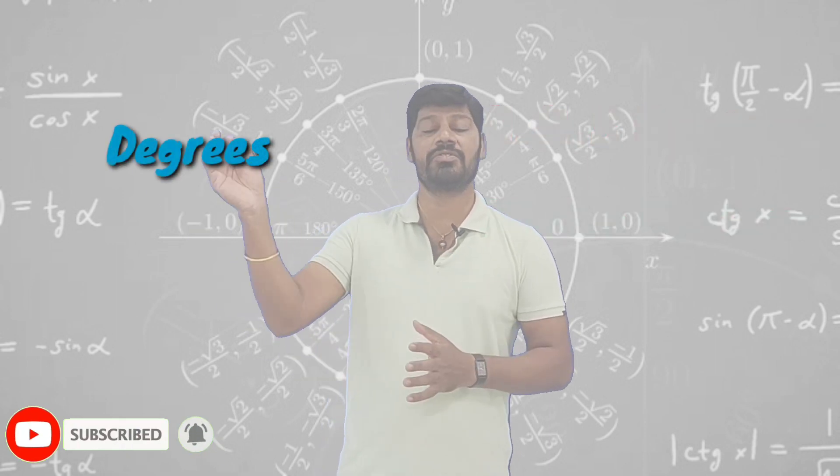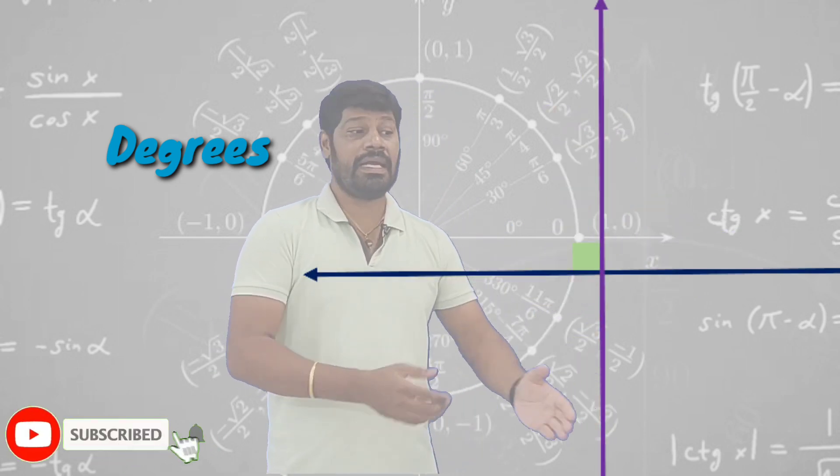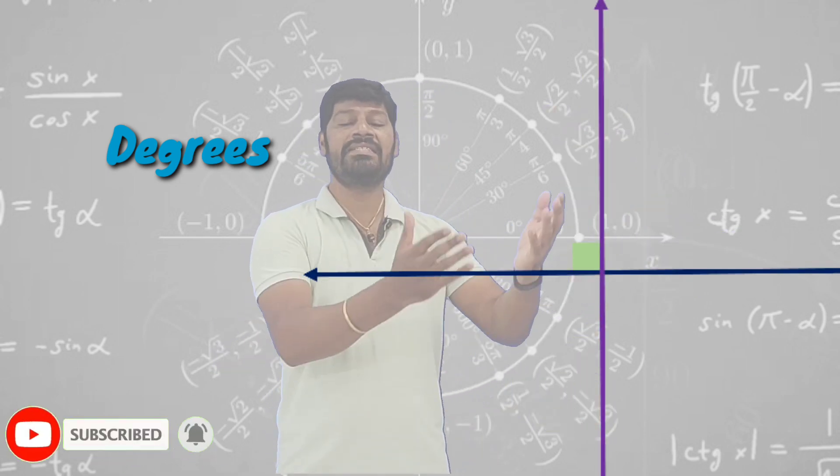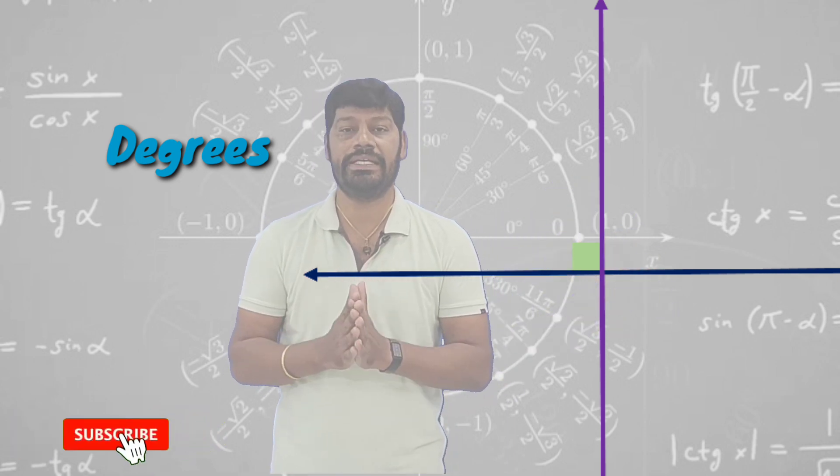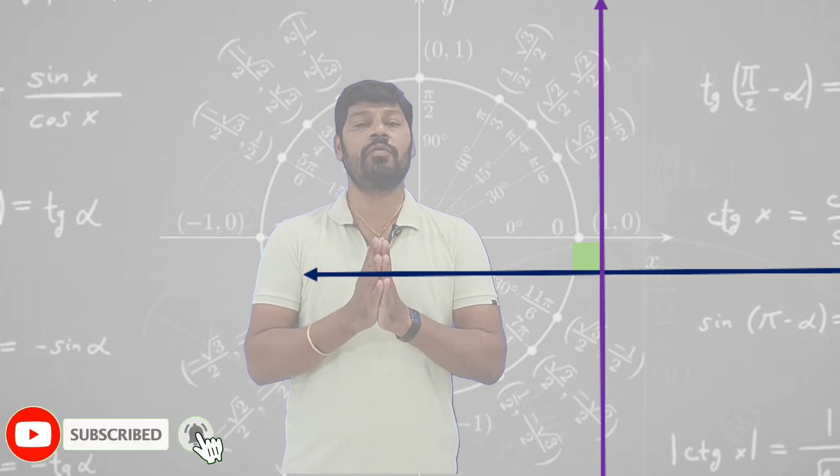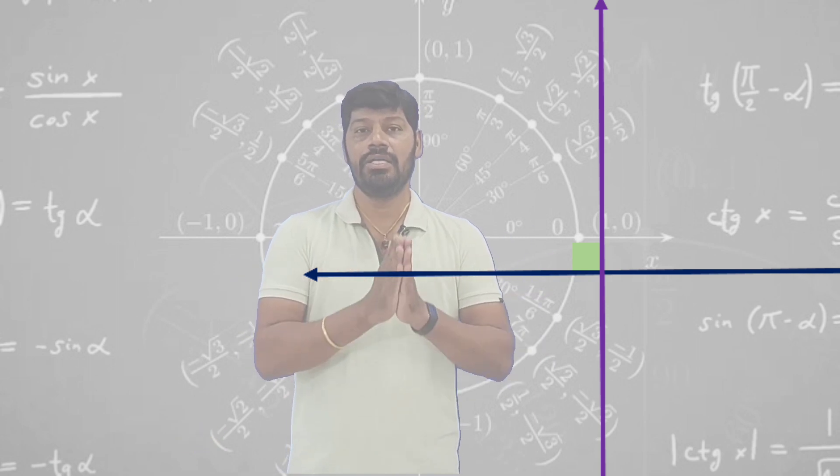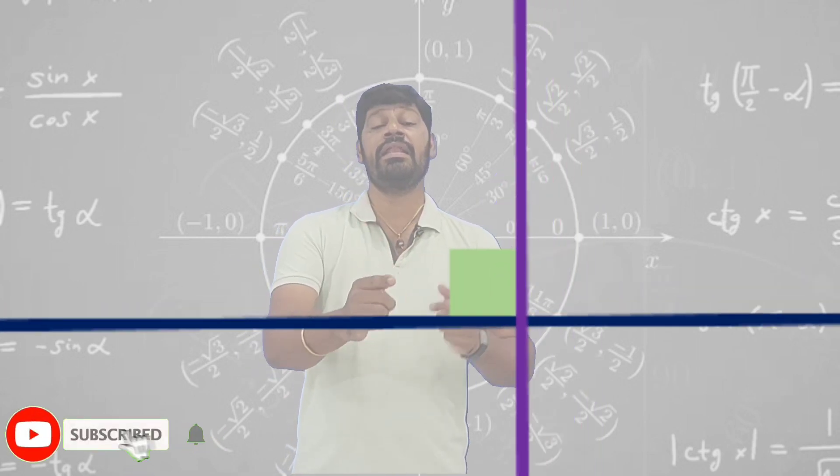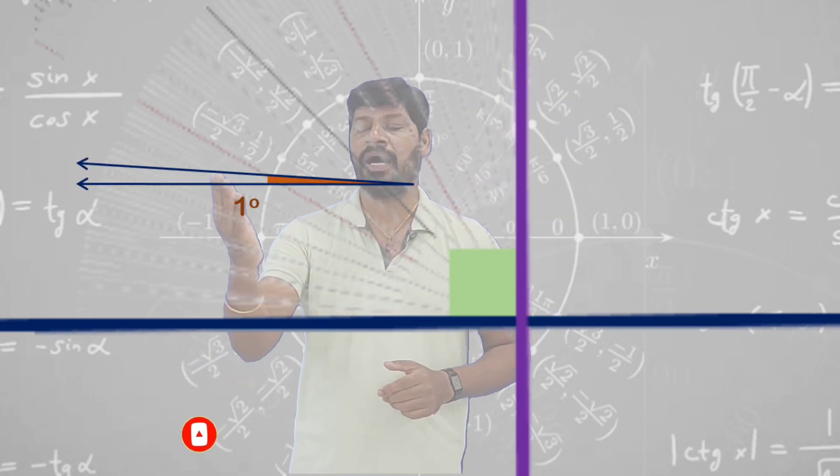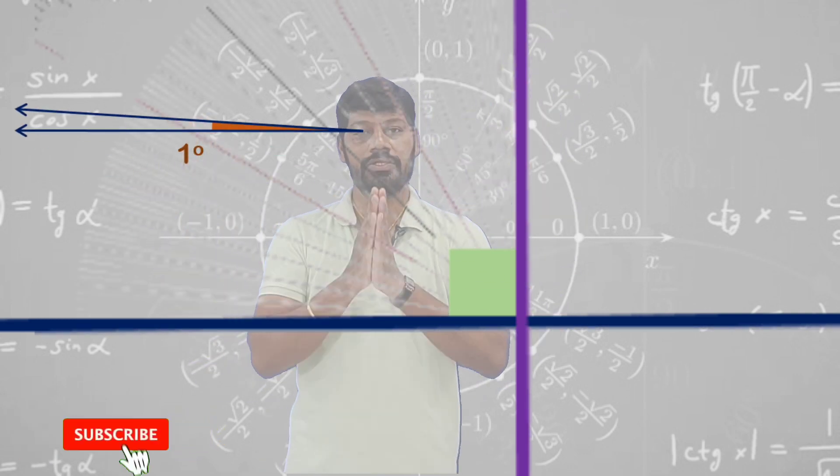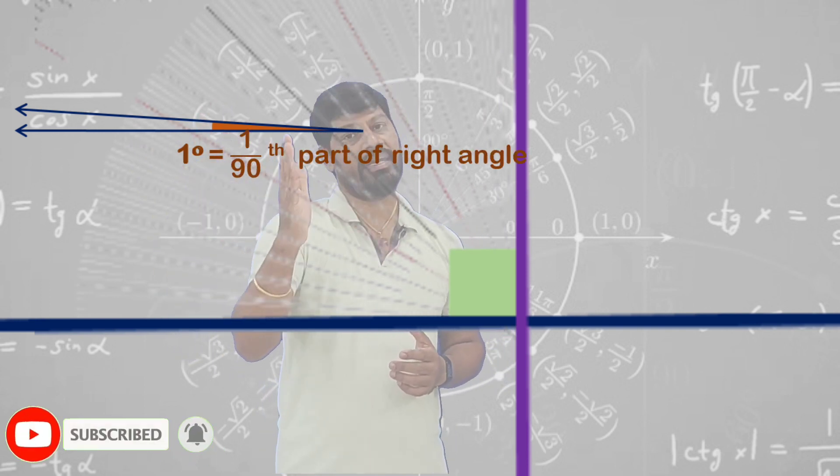To understand this word, we consider two perpendicular lines. As they are mutually perpendicular, the angle between these two lines equals 90 degrees. But apart from using 90 degrees, we can consider this as a right angle. Now if you divide this right angle into 90 equal parts, each part will be considered as one degree. So one degree is nothing but one by 90th part of a right angle.